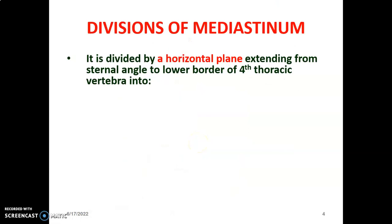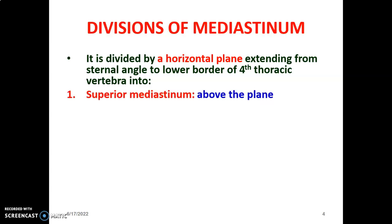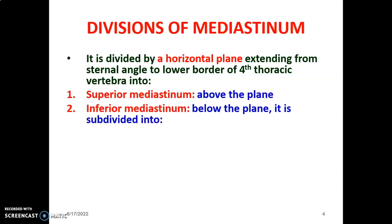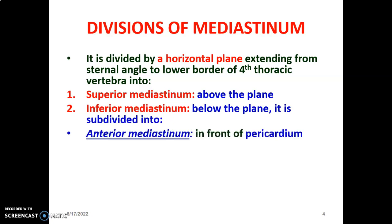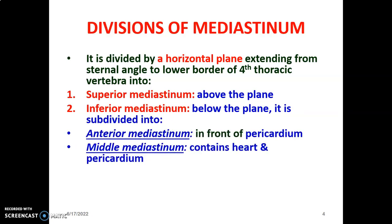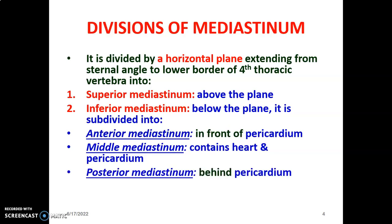The mediastinum is divided by a horizontal plane from the sternal angle of Louis to the lower border of the fourth thoracic vertebra into superior mediastinum above that plane and inferior mediastinum below. The inferior mediastinum is divided into anterior mediastinum in front of the pericardium, middle mediastinum containing the heart and pericardium, and posterior mediastinum located behind the pericardium.